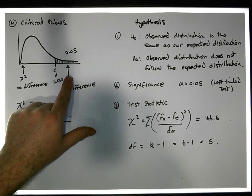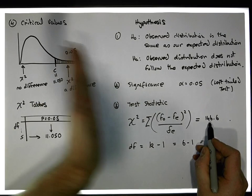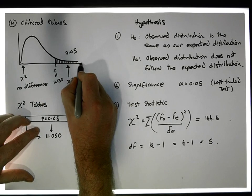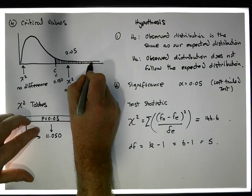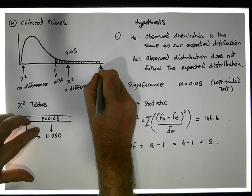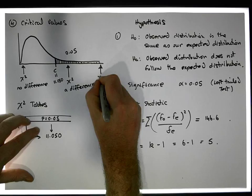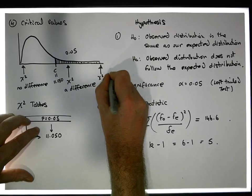Now our test statistic is 146, so our test statistic occurs well out in this tail here. Our chi-squared value that we've observed is 146, which falls into the rejection region.